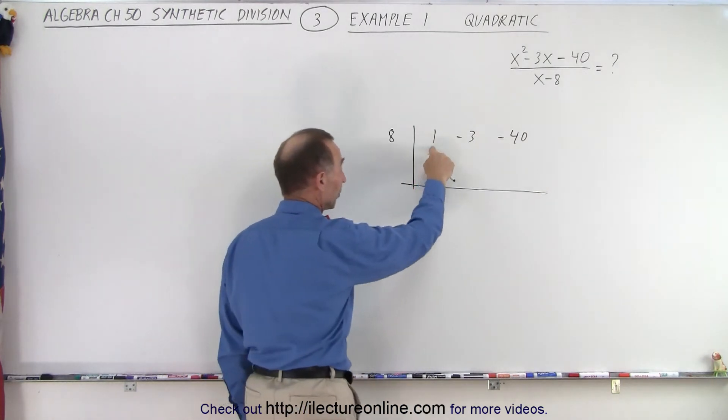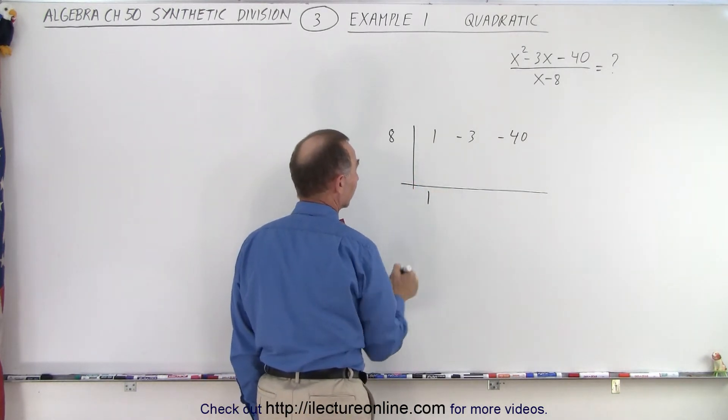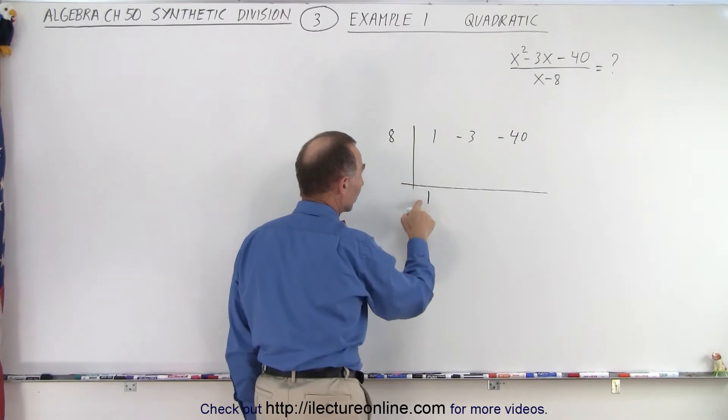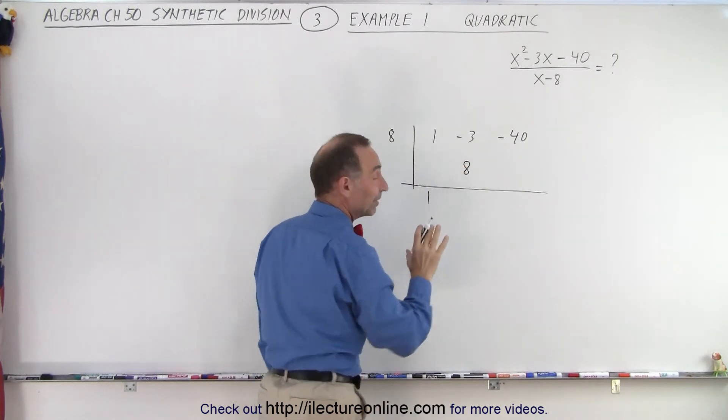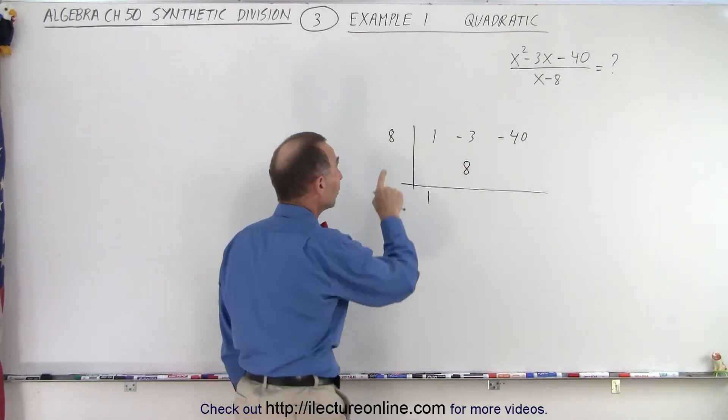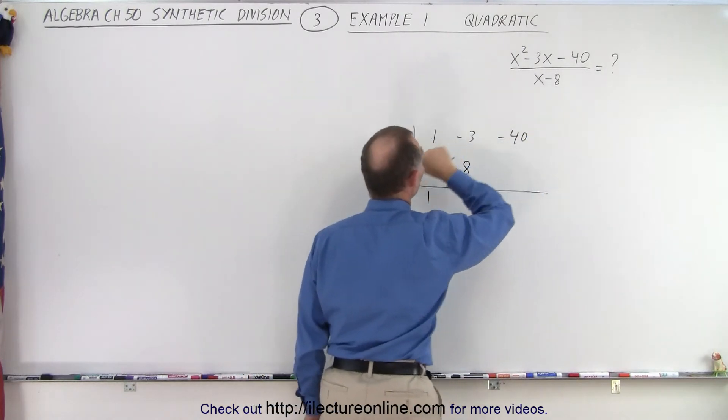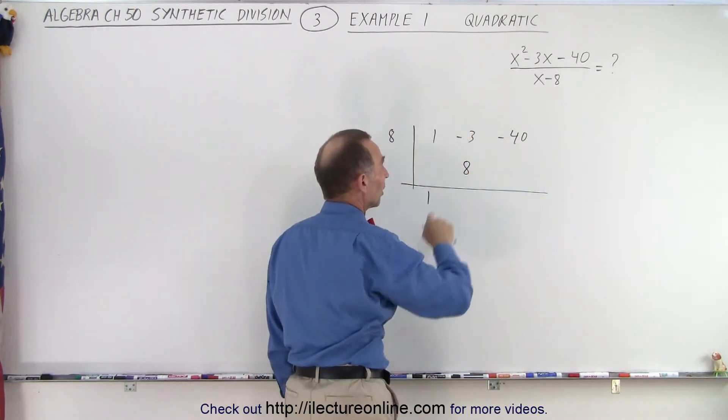Next thing we do is we take the first number and we drop it down here. Then we go 8 times 1 is 8. Remember this is the easy method because we change the sign of this number which means we can now add the numbers.